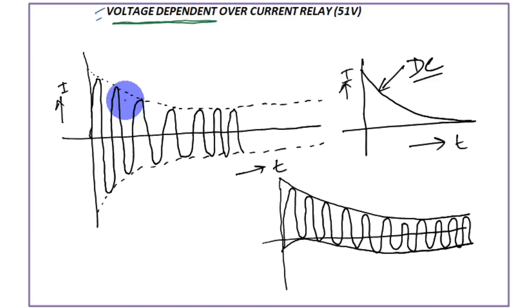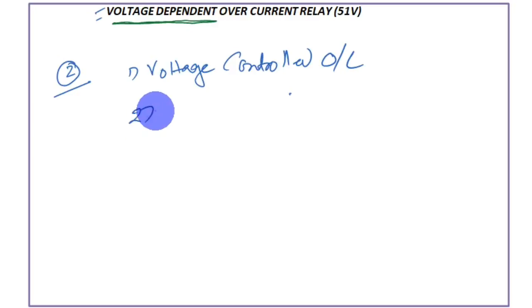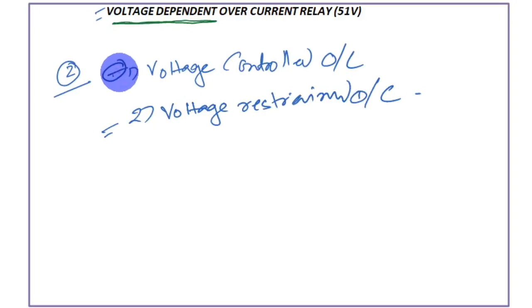You can see there is a huge variation of fault current — even without the DC component, the generator itself has a variation of fault current. That is why conventional overcurrent protection is not adequate for successful generator protection. This is why voltage dependent overcurrent protections are introduced. There are two types: number one is the voltage controlled overcurrent relay, and number two is the voltage restrained overcurrent relay.